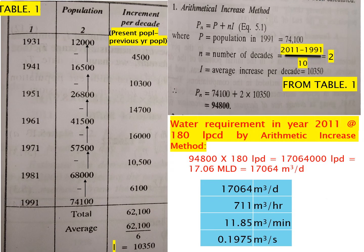This is a very simple method. We have to make one table. In column one we have kept all the years 1931 to 1991, and as per the data we write down the population: 12,000, 16,500, and up to 74,100. Now, increment per decade matlab ki per 10 years mein kitna increment ya increase ho raha hai population mein. Simply, 1941 as compared to 1931 kitna increment hua.